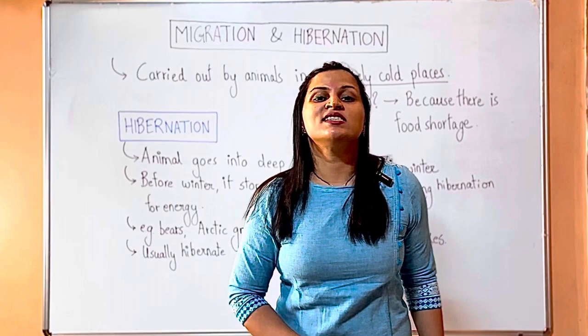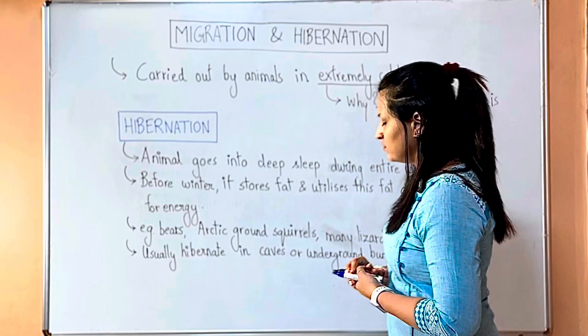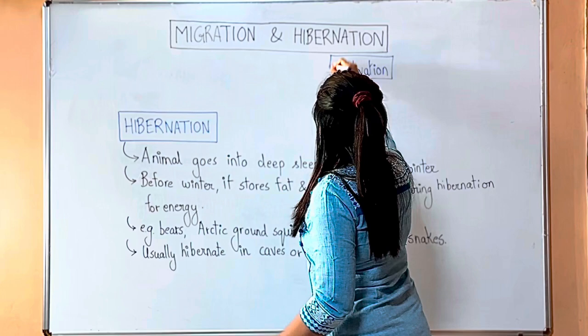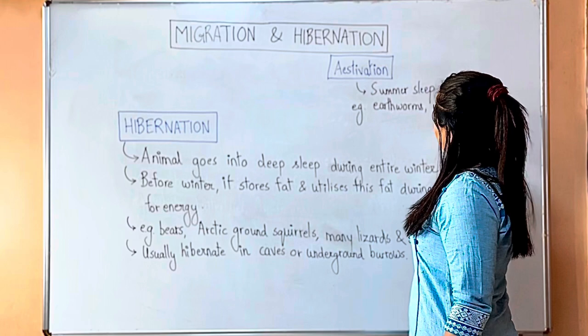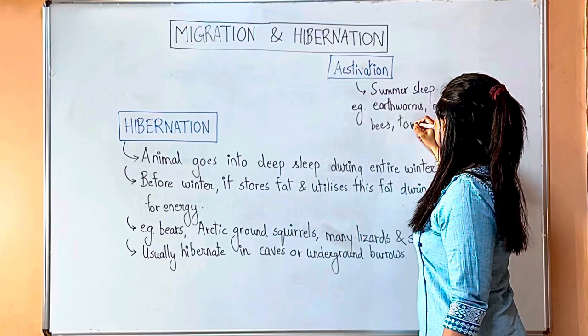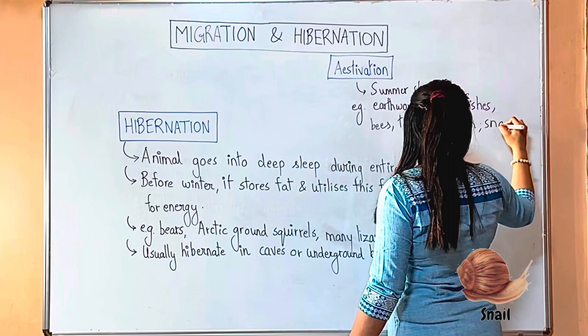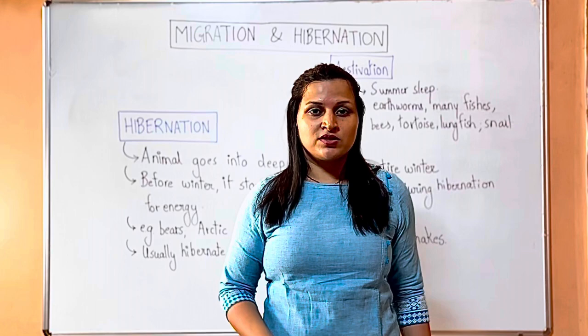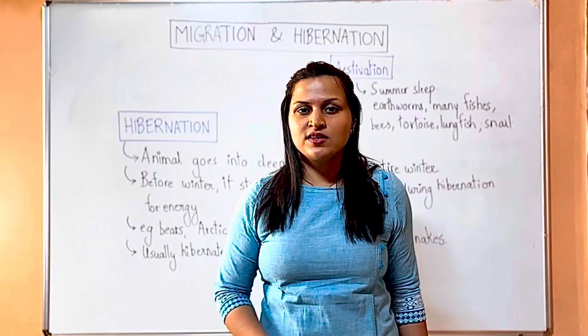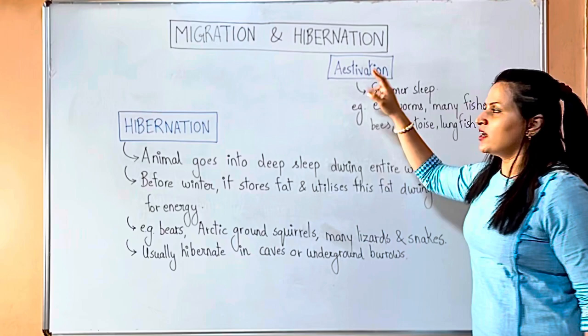Summer sleep is called estivation, not hibernation. Examples of estivation include earthworms, many fishes, bees, tortoise, lungfish, and even the snail. You have never seen a snail come out during summers — it comes out only during the rains. So during summers it was estivating. With that we have completed migration, hibernation, and estivation.